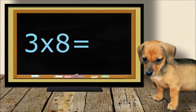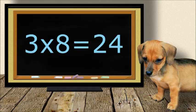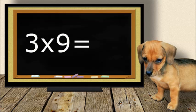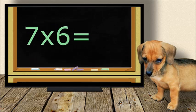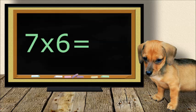3 times 8 equals 24. 3 times 9 equals 27. 7 times 6 equals 42.